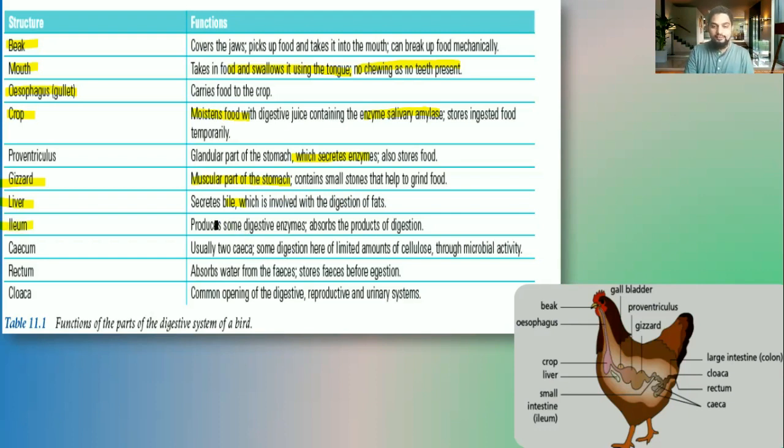Next structure we have here is the ileum. And the ileum produce the remaining digestive enzymes that are needed to digest the carbohydrates, the fats and the proteins. And then when they are finally digested into the smallest unit, then they are absorbed through the walls of the ileum.